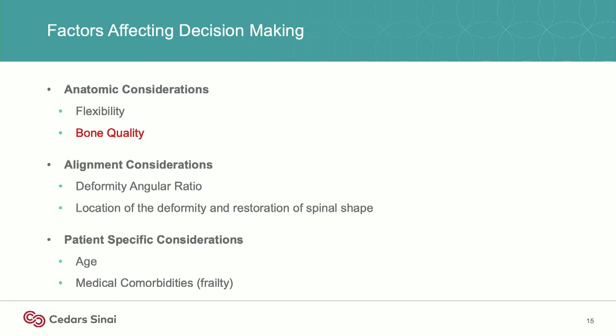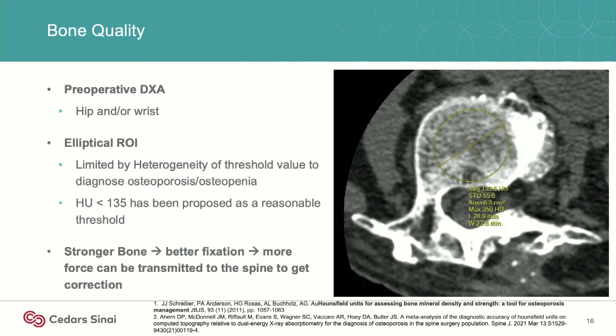The second thing to consider is bone quality. If you're going to be trying to correct through disc spaces and the spine is relatively rigid, you need good anchor points to get that correction. The preoperative DEXA — hip and wrist — is important. The spine can sometimes give falsely elevated levels because of osteophytes. Elliptical ROI is something I'm using a lot on patients where I have CT scans.